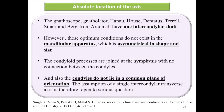Articulators supporting this view include the Gnathoscope, Gnatholator, Hanau, Dentatus, Stuart, and Broadrick Arcon, all of which have one intercondylar shaft. However, these absolute conditions do not exist in the mandibular apparatus, which is asymmetrical, and the condyloid processes are joined at the symphysis with no connection with the condyles. The condyles do not lie in a common plane of orientation, so the assumption of a single intercondylar transverse axis is open to serious question.